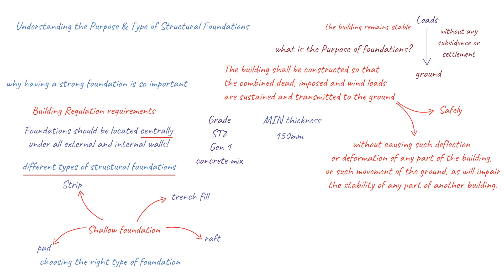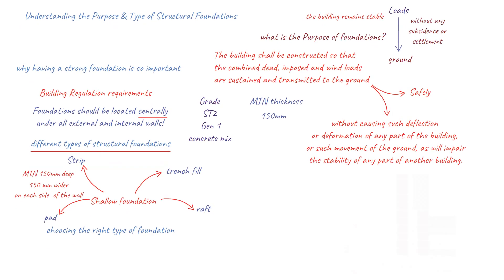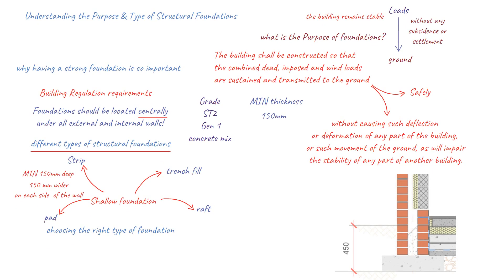Since the 1900s, concrete has been used, and typically a foundation will be a minimum of 150 mm deep, usually 225 mm, and 150 mm wider on each side of the wall. The depth from ground level to the bottom of the foundation is important to ensure that the foundation does not experience movements in the soil due to climatic changes such as heat, frost and moisture changes. Except where strip foundations are founded on rock, they should have a minimum depth of 450 mm to their underside to avoid the action of frost, or 750 mm in clay soils to avoid the influence of vegetation.